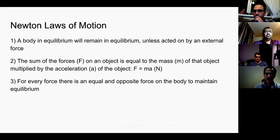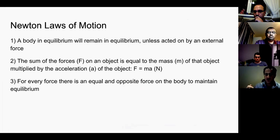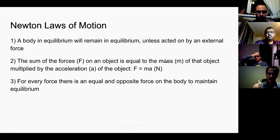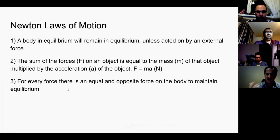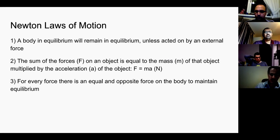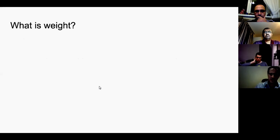Newton's first law: a body in equilibrium will remain in equilibrium unless acted on by an external force. Number two: the sum of all forces on an object is equal to the mass multiplied by the acceleration — which gives you force. Number three: for every force there is an equal and opposite force on the body, provided the body is in equilibrium.